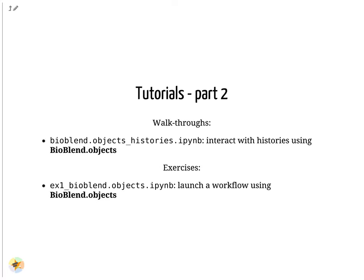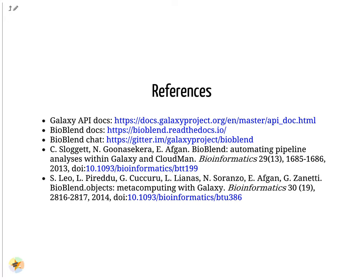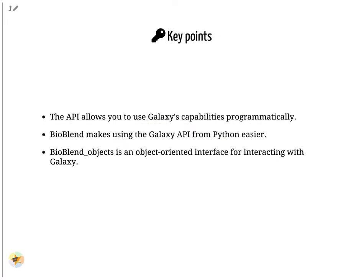Now you can try BioBlend_objects and see how it compares with BioBlend — follow the instructions on the slide to access the tutorials and exercises. Here you can find the links to the documentation of the Galaxy API and of BioBlend. We have a dedicated Gitter channel to chat about BioBlend. If you use BioBlend or BioBlend_objects, please cite these papers. The API allows you to use Galaxy's capabilities programmatically. BioBlend makes using the Galaxy API from Python easier, and BioBlend_objects is an object-oriented interface for interacting with Galaxy.